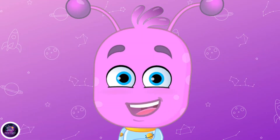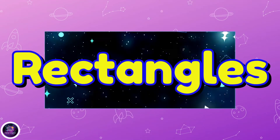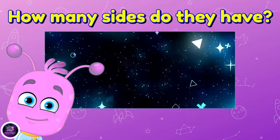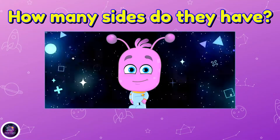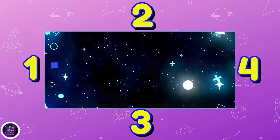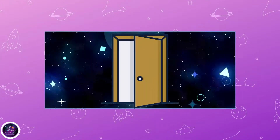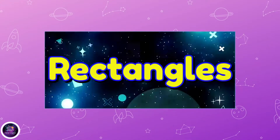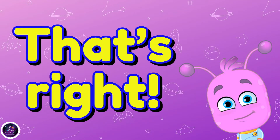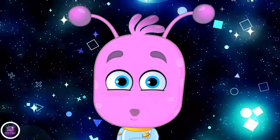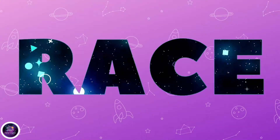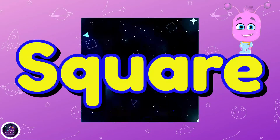Blasting off on a space adventure, shape space race! What's the next shape to learn about? Rectangles! How many sides do they have? One, two, three, four — like a chocolate bar or your bedroom door. Rectangles have four sides!